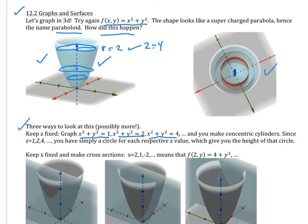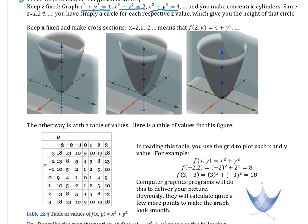Looking at those cross-sections from the top view, we have those concentric circles that help us understand the shape. Now let's do it with keeping x fixed — it will be very similar if we keep y fixed, because we have symmetry about the z-axis.